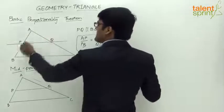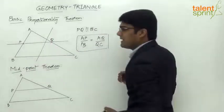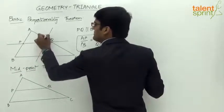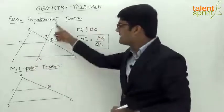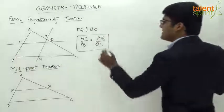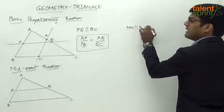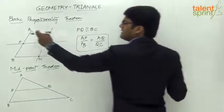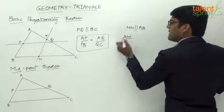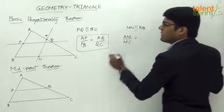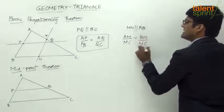Now let's try drawing a line parallel to AB. This line meets AC at M and BC at N. Since MN is parallel to AB, the ratio in which the two sides are divided will be the same, so AM/MC = BN/NC. That's the application of the Basic Proportionality Theorem.